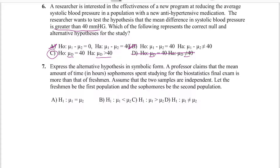Number seven is also setting up our hypothesis statement, comparing freshmen and sophomores. Reading the verbiage, the professor claims that time sophomores spend studying versus freshmen is going to be different. We state that sophomores are going to study more than freshmen. Freshmen are mu sub one, and sophomores are going to study more. So we're set up as answer B.